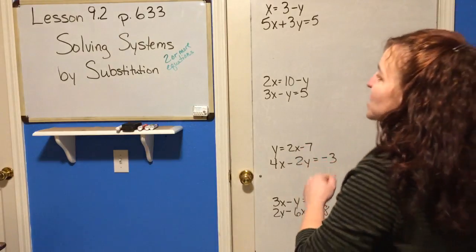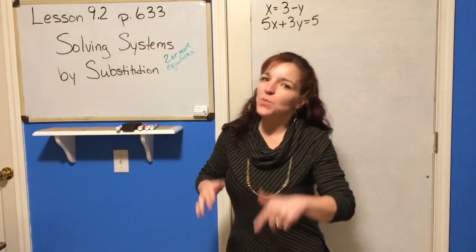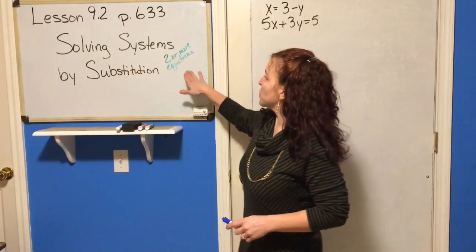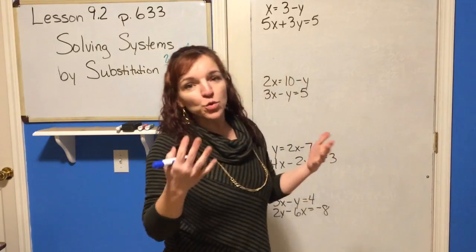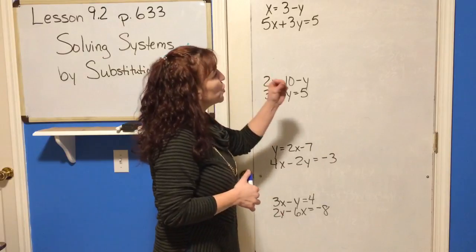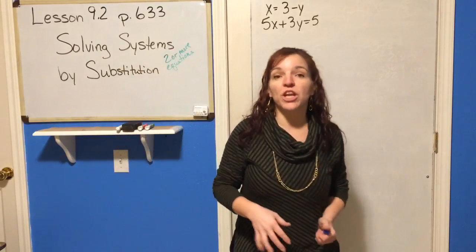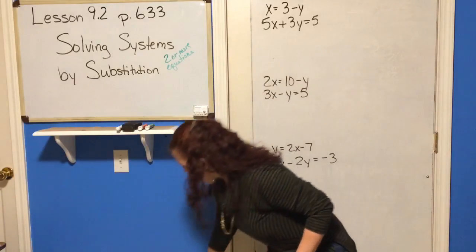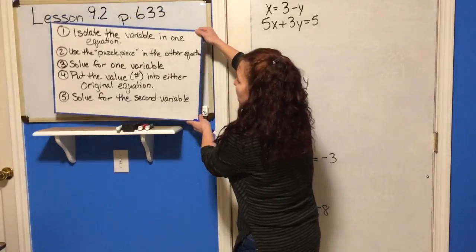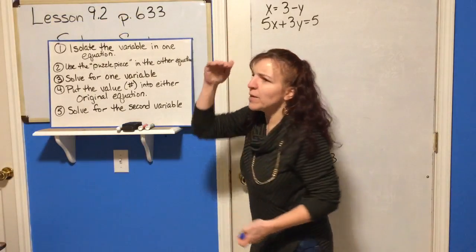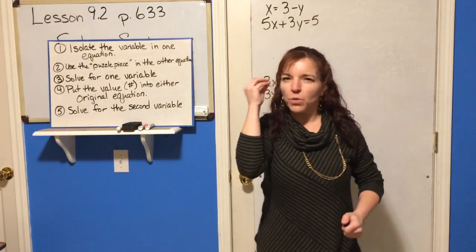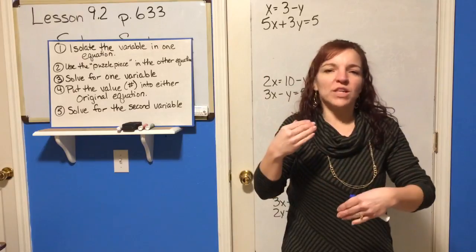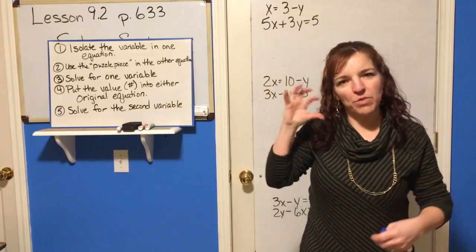Section 9.2: solving systems by substitution — this way is much more fun than graphing. We still have systems which are two or more equations with two unknowns. We want to use substitution instead of the cumbersome graph. I've got some steps here — they look long and laborious, so write them out. Once you see how it works it won't seem quite so cumbersome.